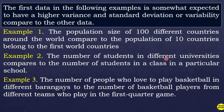Basketball is a famous game and almost every guy loves to play, so gathering the number of people who love to play from different barangays will yield very different results compared to the number of basketball players from different teams in a first quarter game. We know there are only 5 players from each team. Therefore, if you compute the variance from different teams, you will get a value of 0, and the mean will equal 5, since each team plays with exactly 5 players.